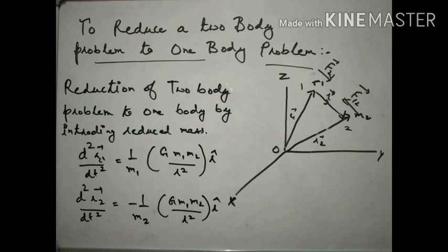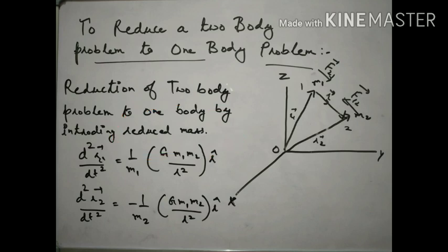Now we have the equations of motion of both bodies. The main motive is to reduce the two-body problem to a one-body problem. We will do this by introducing the concept of reduced mass. For that, we rearrange some equations: d²r1/dt², with m1 in the denominator. We have done both equations.